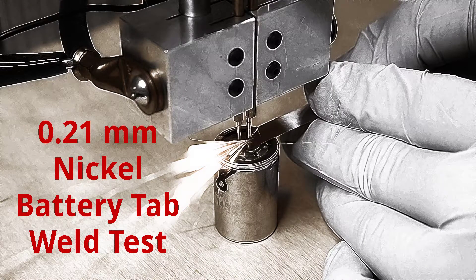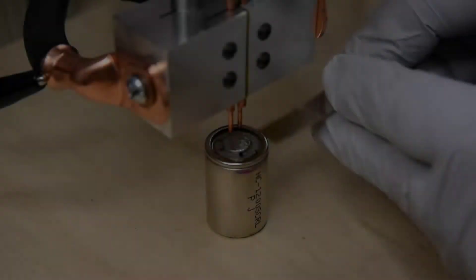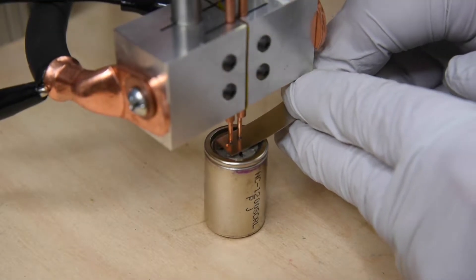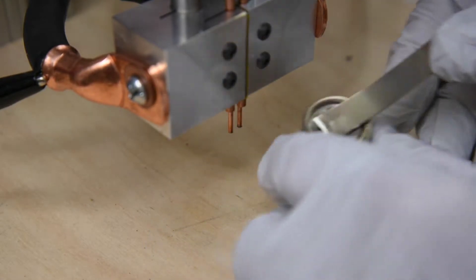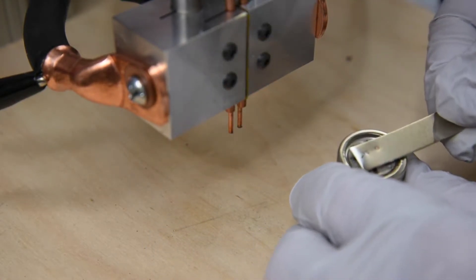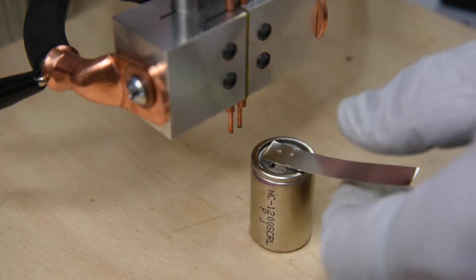I'm doing a few battery tab spot weld tests of 0.21mm thick nickel strip. This is about the limit of what my half built, well one-tenth built, capacitor discharge welder will do. So I won't be trying anything thicker until I get the welder finished.